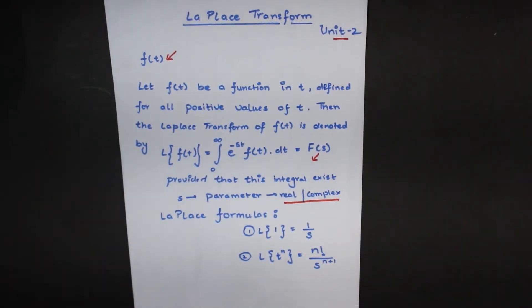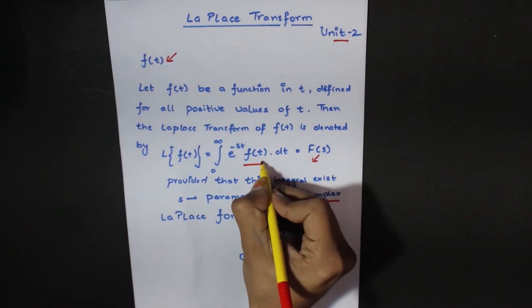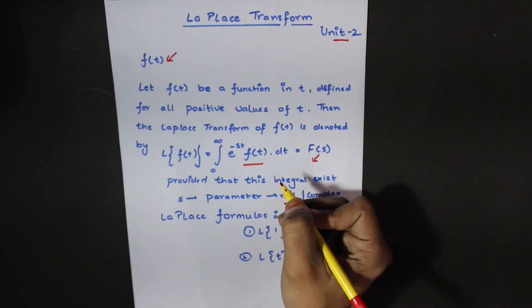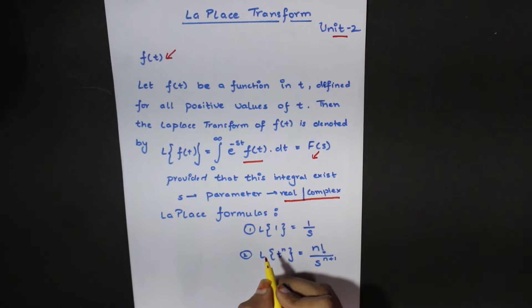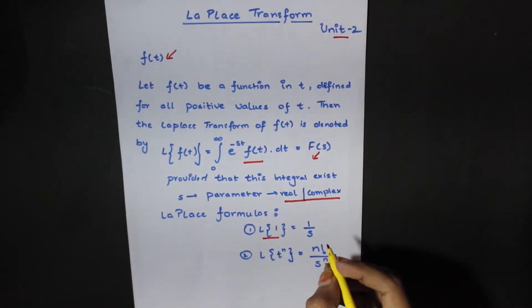Now Laplace has some basic formulas. You will have to remember them. There is no rule, you will have to remember them. And all the formulas are derived from this formula. No one asked you in the paper, just keep your results. The first is Laplace of 1. This is 1 over s.